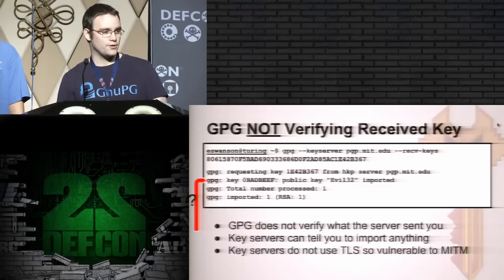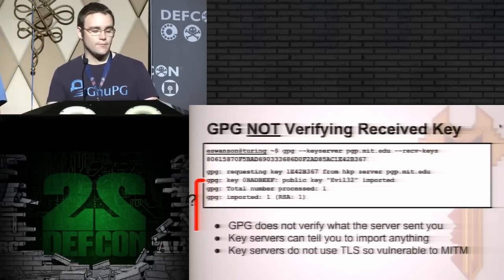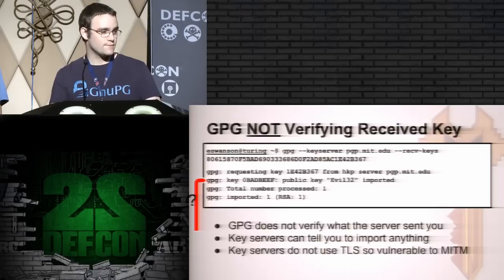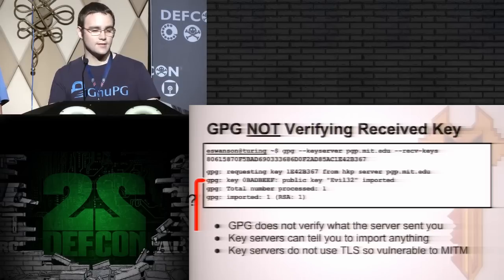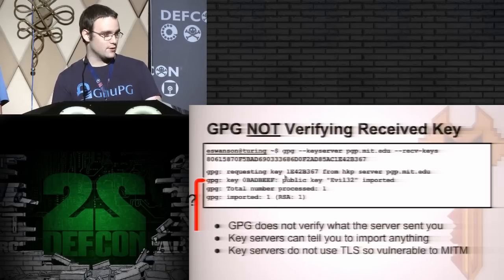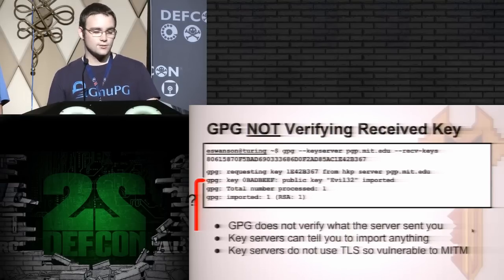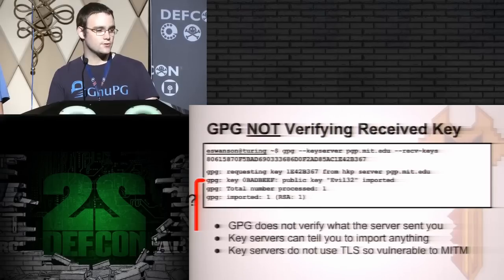More worryingly, GPG doesn't even verify that the received key matches the one you asked for. So if you ask for the full fingerprint but there's a man-in-the-middle attack — in this case, a server impersonating PGP.MIT.EDU which returns back the zero-bad-beef key — clearly that doesn't match the fingerprint you asked for, but GPG gives no warning and this key is in your key ring. Since GPG doesn't verify anything, the key servers can tell you to import anything they want.